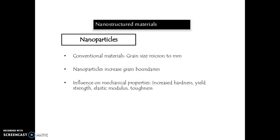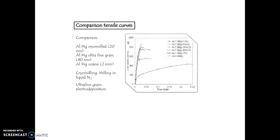In the conventional material, when increasing the size — that means grain size from micron to mm — the properties will be varying. The comparison of the tensile curve is shown in the drawing. Here, the axes show the true stress. Aluminum-magnesium cryomilling at 20 nanometers, and when it is ultrafine at 80 nanometers, showing the value, then 2 mm, and milling in liquid nitrogen — cryomilling — showing various values.